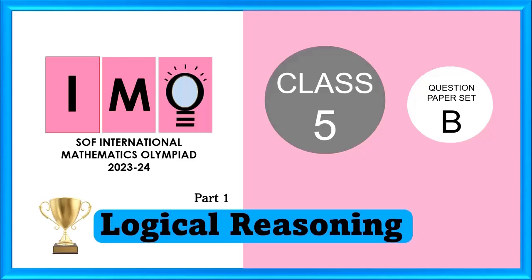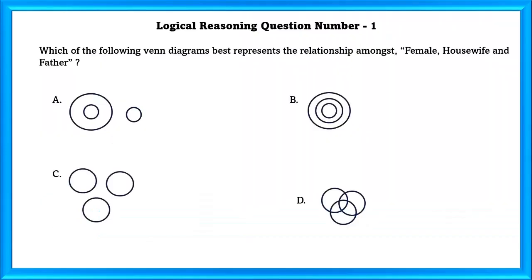IMO Class 5 Logical Reasoning. Question Number 1: Which of the following Venn diagrams best represents the relationship amongst female, housewife, and father? Females can be housewives, but fathers cannot be housewives. So the answer is A.